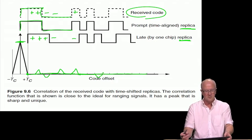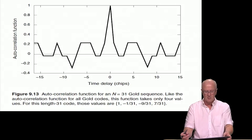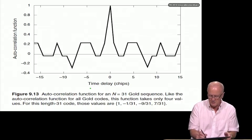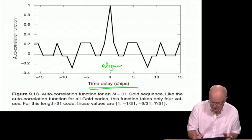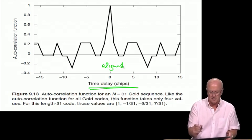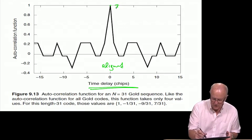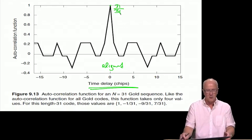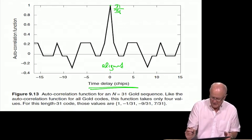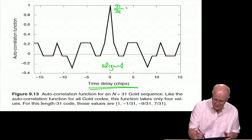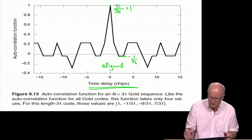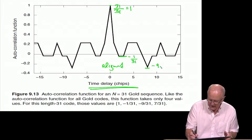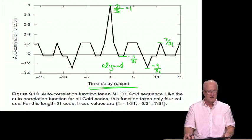But here's the goal. Let me show you the auto correlation function for a real code. Here's the time delay in chips. Zero means aligned. Notice that we have normalized the correlation peak. It's really 31 agreements divided by a length of the code, which is 31. And then we get side lobes. So this is equal to 1. Down here, slightly negative is negative 1 over 31, and then 7 over 31.